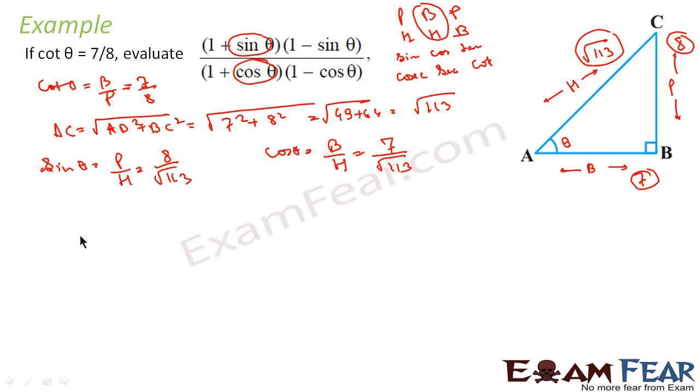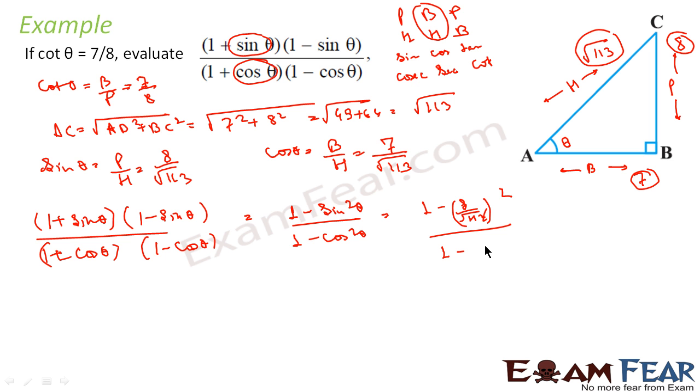Now we can evaluate: (1 + sin θ)(1 - sin θ) by (1 + cos θ)(1 - cos θ). Using a plus b into a minus b equals a square minus b square, this becomes (1 - sin² θ) by (1 - cos² θ).